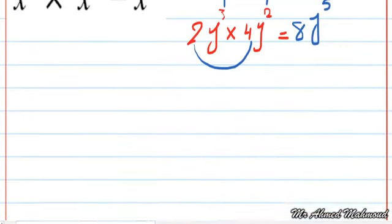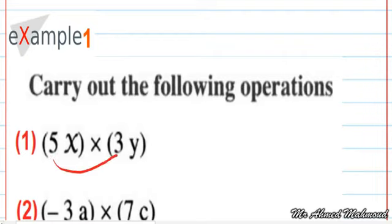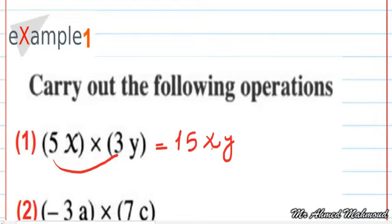Example 1: find the product of these terms. The first term is 5x times 3y. We multiply 5 by 3 to get 15, and x and y are unlike symbols, so we can't add their powers. We write x and y without change. The answer is 15xy, meaning 15 times x times y.